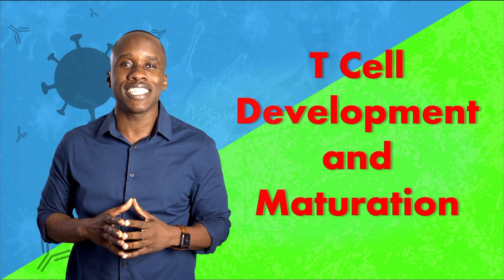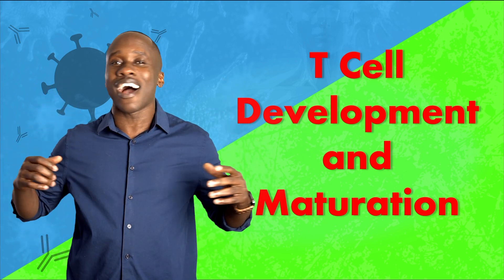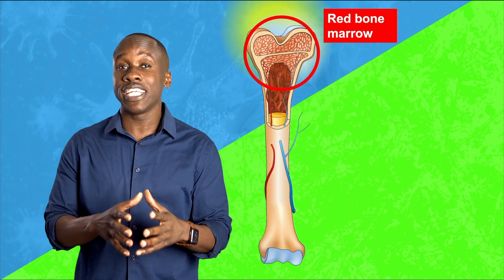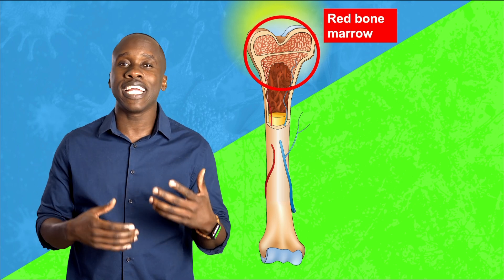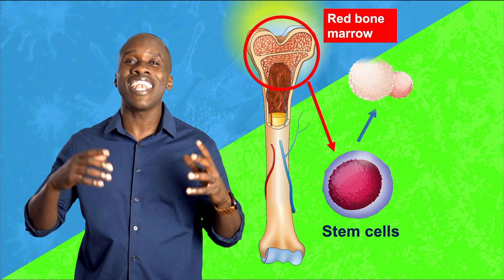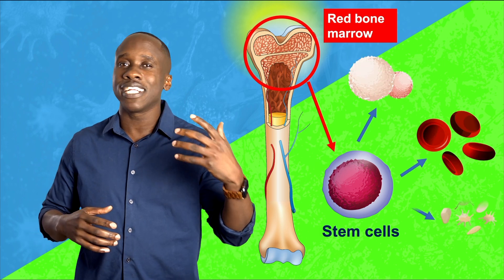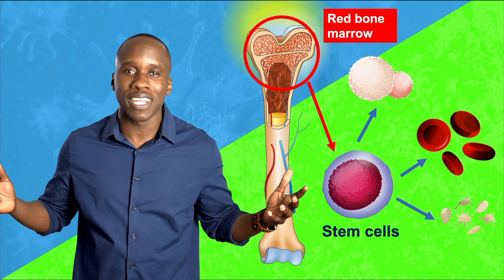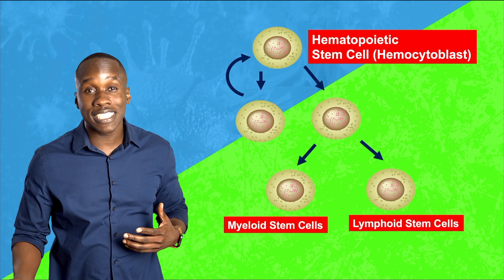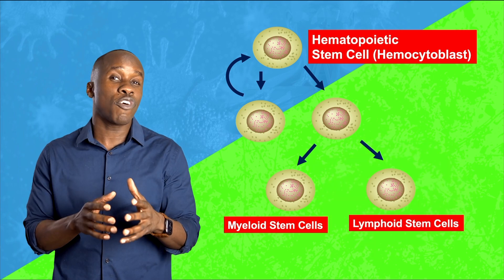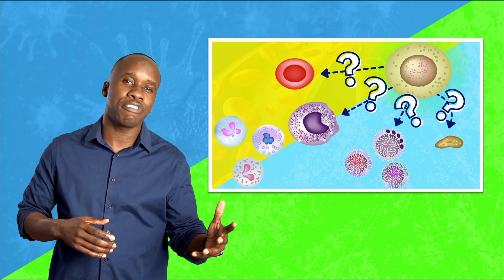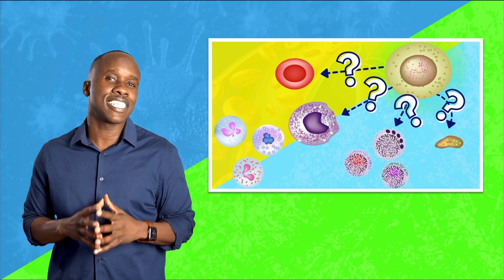This is Leslie Samuel here from Interactive Biology TV, where we're making biology fun. T cells start their developmental journey in the bone marrow. As we spoke about in our previous video on hemopoiesis, we start with hemopoietic stem cells that go through a lot of division and differentiation to become all of the cell types in the blood. They can differentiate into a myeloid stem cell or a lymphoid stem cell, and it's from the lymphoid stem cell that we ultimately get the T cells.